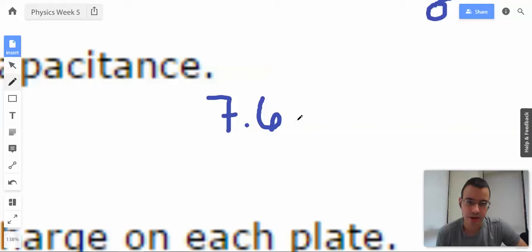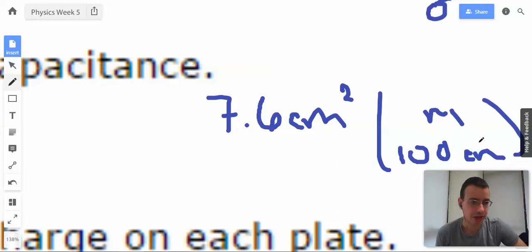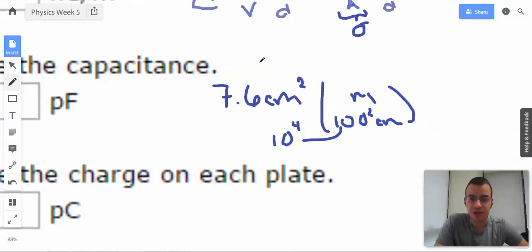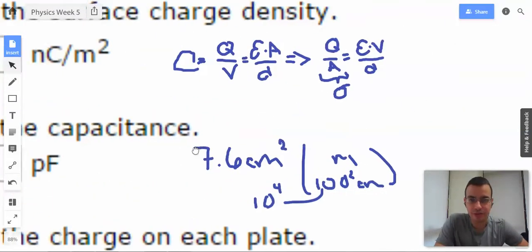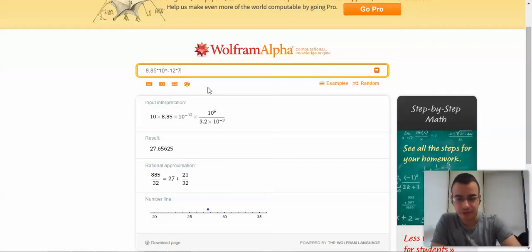We know there's 100 centimeters per meter, so we're going to have to square this. This then becomes 10 to the fourth because 100 is 10 squared, 10 squared squared is 10 to the 4. I'm going to do 7.6 divided by 10 to the fourth.